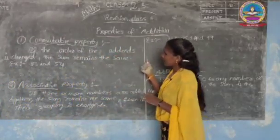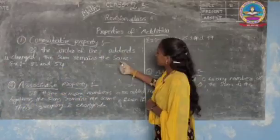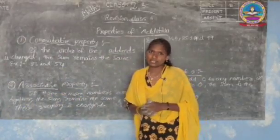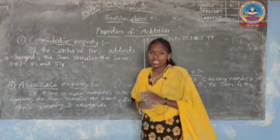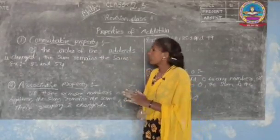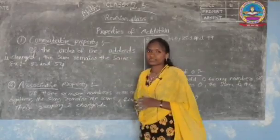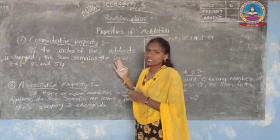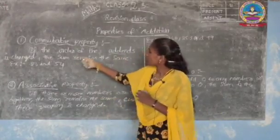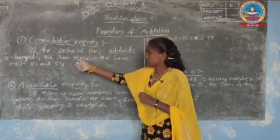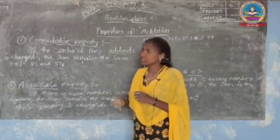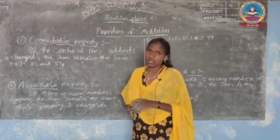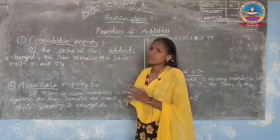If the order of the addends is changed, the sum remains the same. We know already what addends are — a number that is to be added is called an addend. If we are changing the order of the given numbers, the sum remains the same. That is the commutative property.